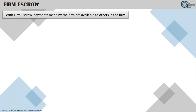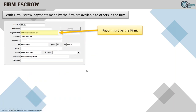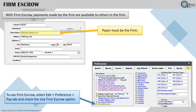Firm escrow is a great feature: payments made by the firm are available to any member of that firm. For example, if I have escrow money and Jason needs to use it, he can. Two requirements: on the payment record, the payer must be the firm, and in preferences under the pay tab, you must check 'Use Firm Escrow.' This is a blue/global preference affecting all users.